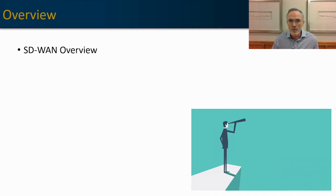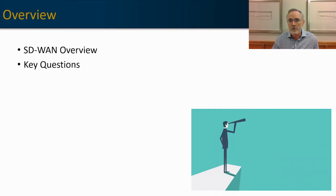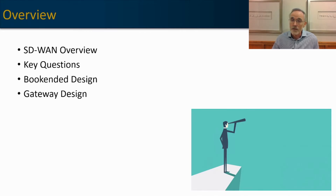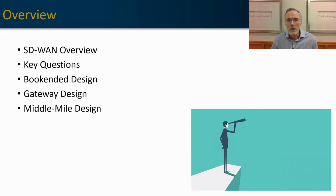In order to evaluate SD-WAN, we're going to do a quick SD-WAN overview — just one page. I have other videos for that. Then we're going to look at some of the key questions that you want to ask yourself before evaluating the different architectures of an SD-WAN platform. Then we'll take a look at the three different architectures: the bookended, gatewayed, and middle-mile designs. And lastly, we'll talk about how to evaluate those designs.